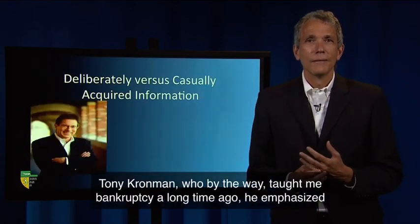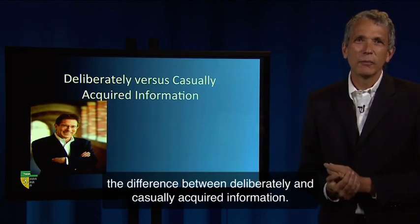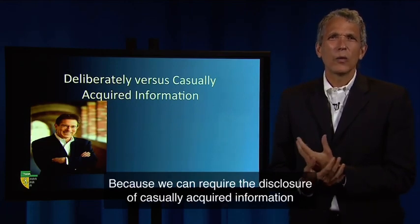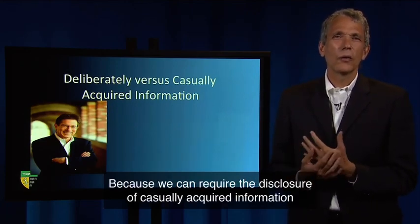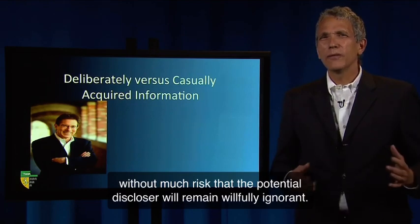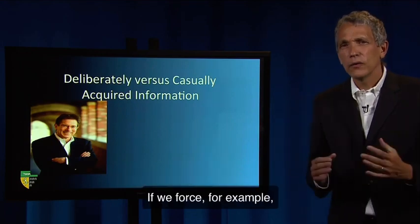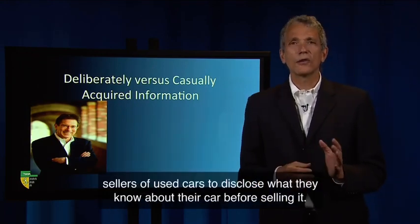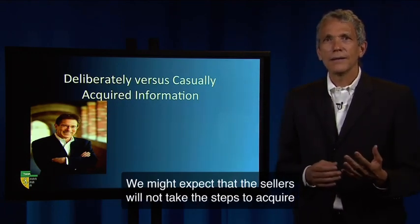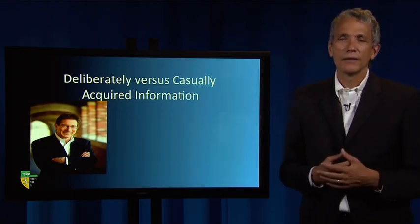Tony Cronman, who taught me bankruptcy a long time ago, emphasized the difference between deliberately and casually acquired information because we can require the disclosure of casually acquired information without much risk that the potential discloser will remain willfully ignorant. That's not the case with deliberately acquired information. If we force sellers of used cars to disclose what they know about their car before selling it, we might expect that these sellers will not take the steps to acquire the information in the first place.